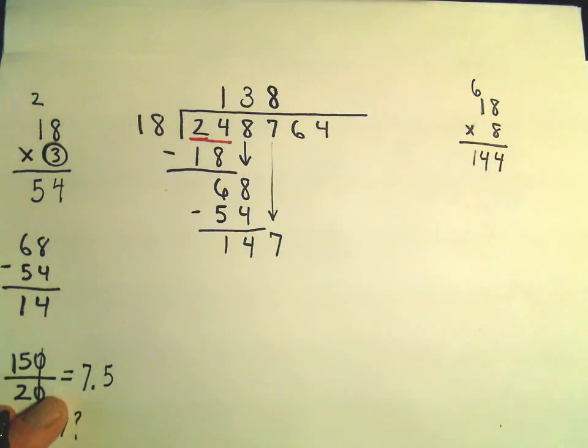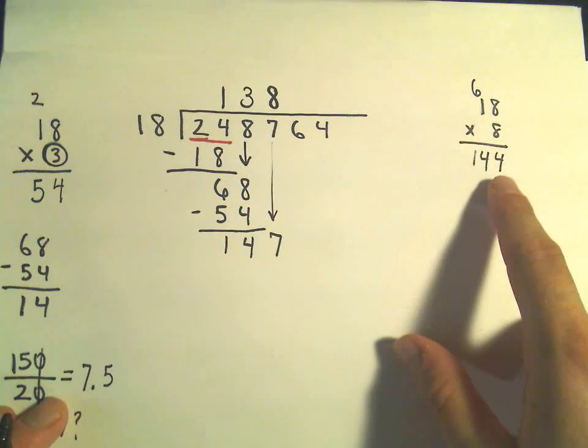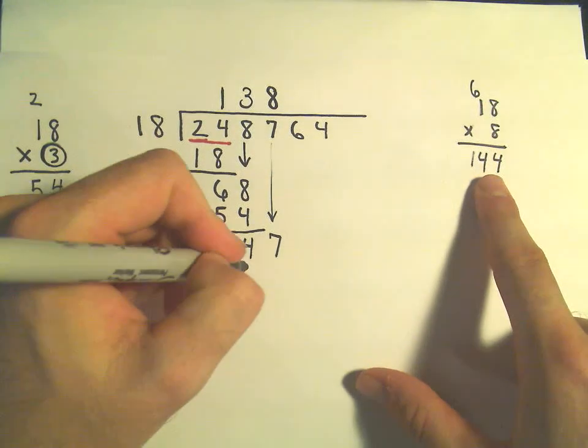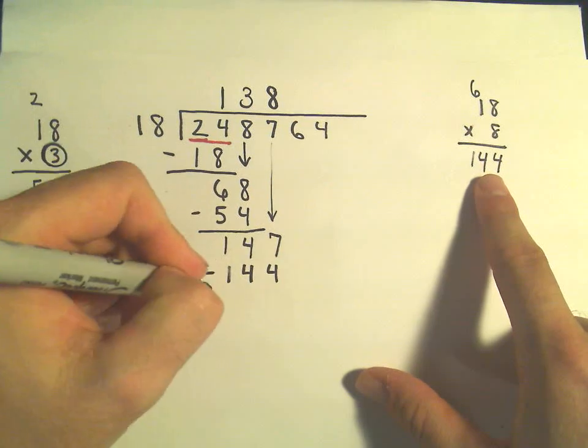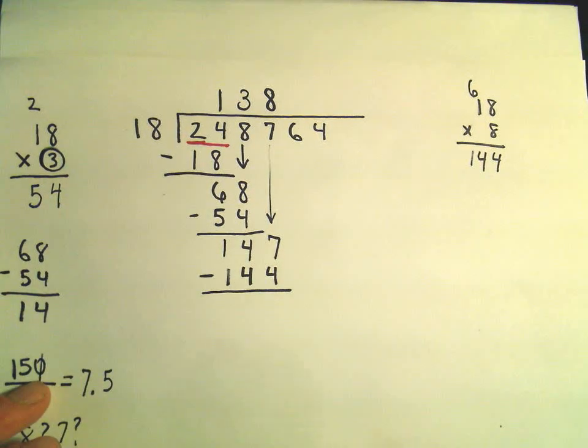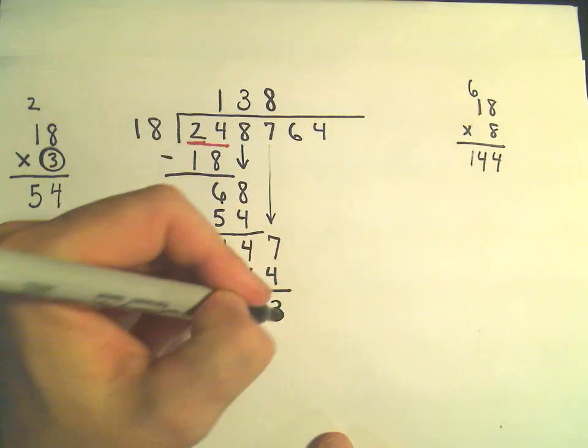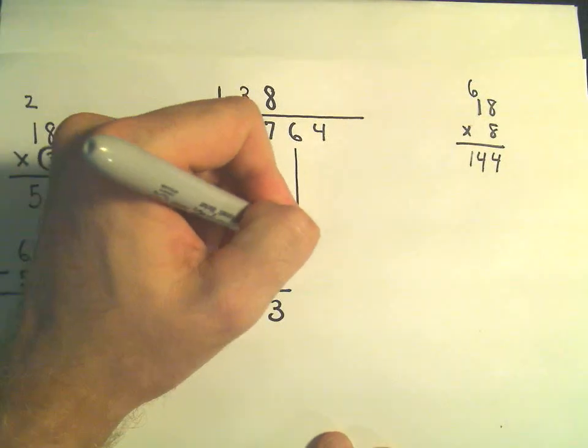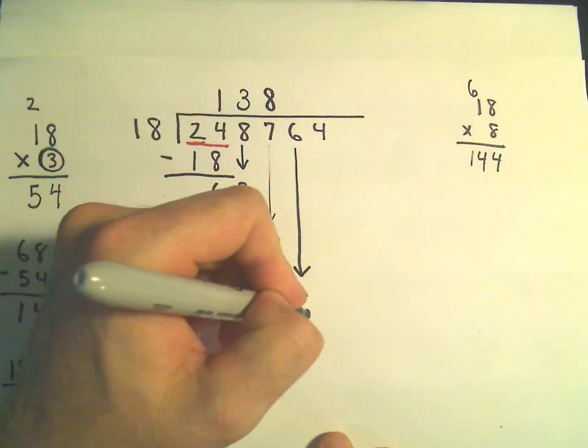Okay, so I'm going to put my 8 up there. So again, 8 times 18, that's what we just did over here, is 144. If we subtract, 147 minus 144 is going to give us 3. And then we simply drop our 6 down.